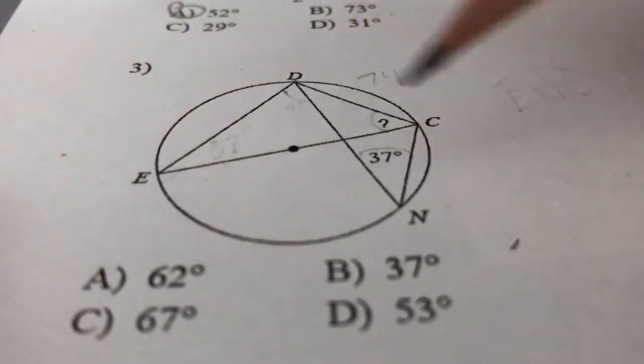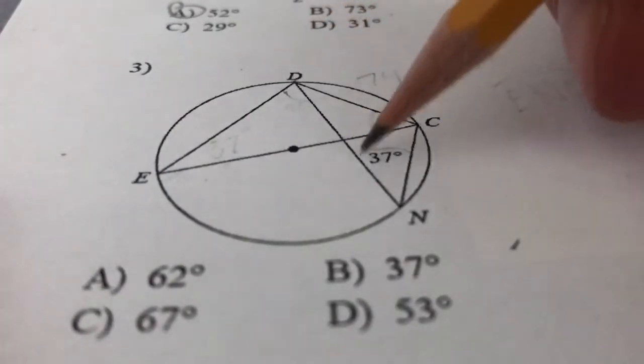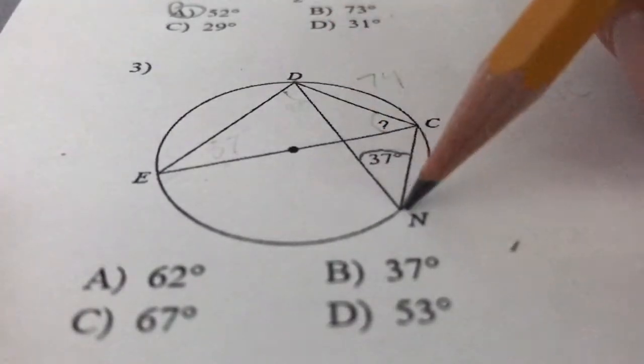So let's look at number 3. We have this 37 degrees here, and it's talking about angle DNC.